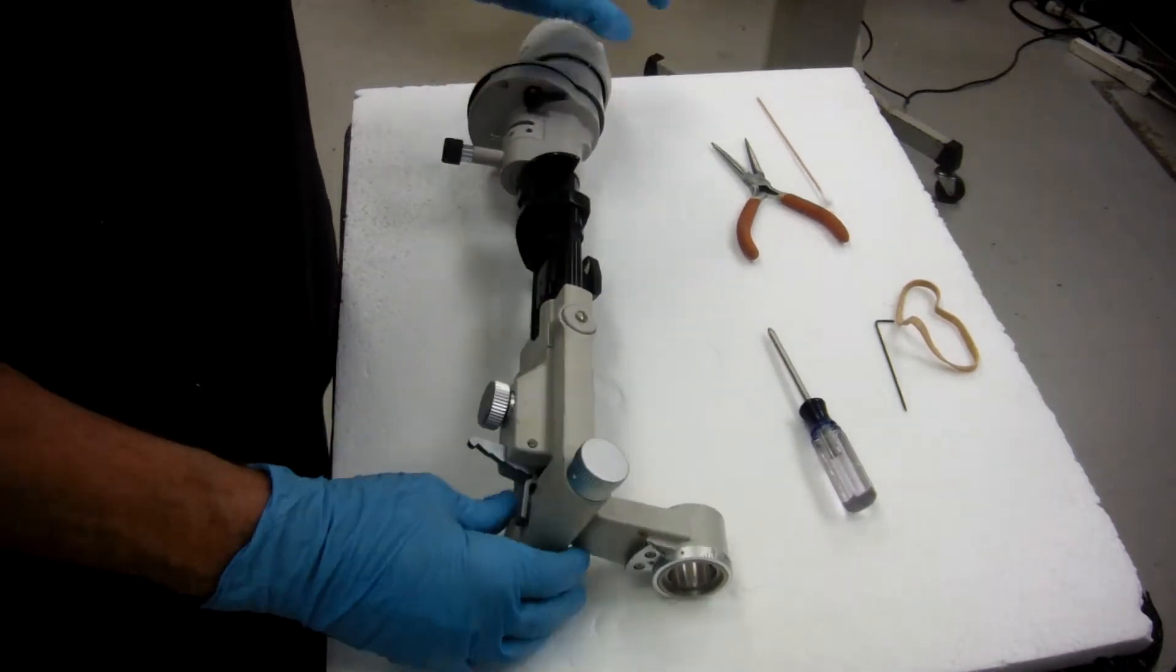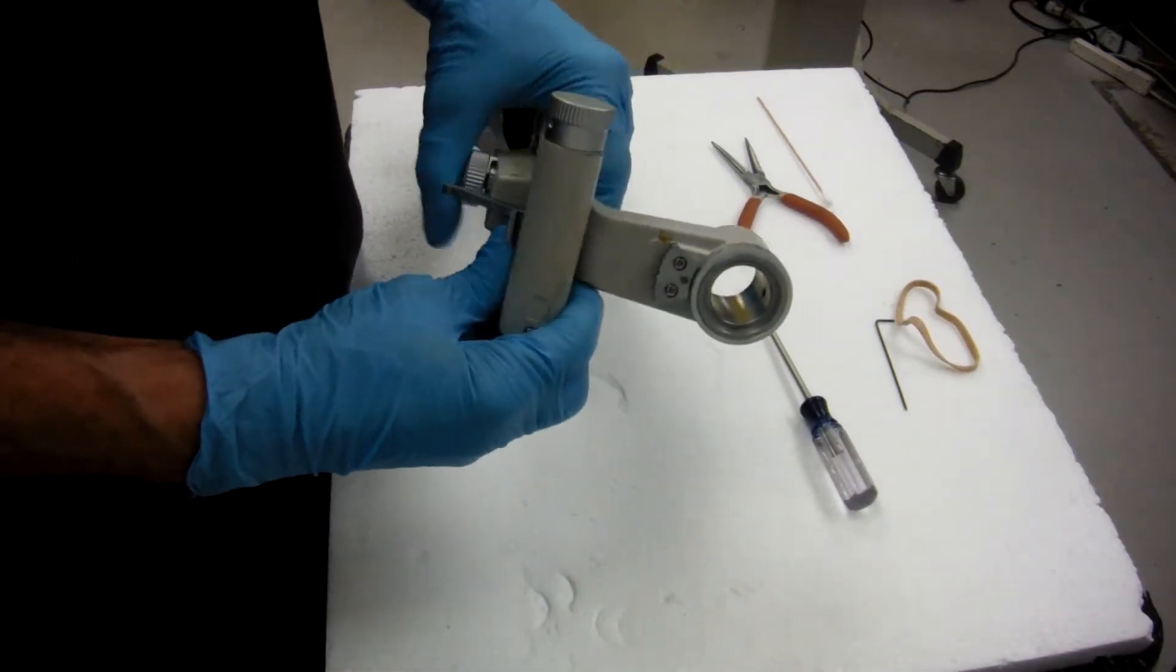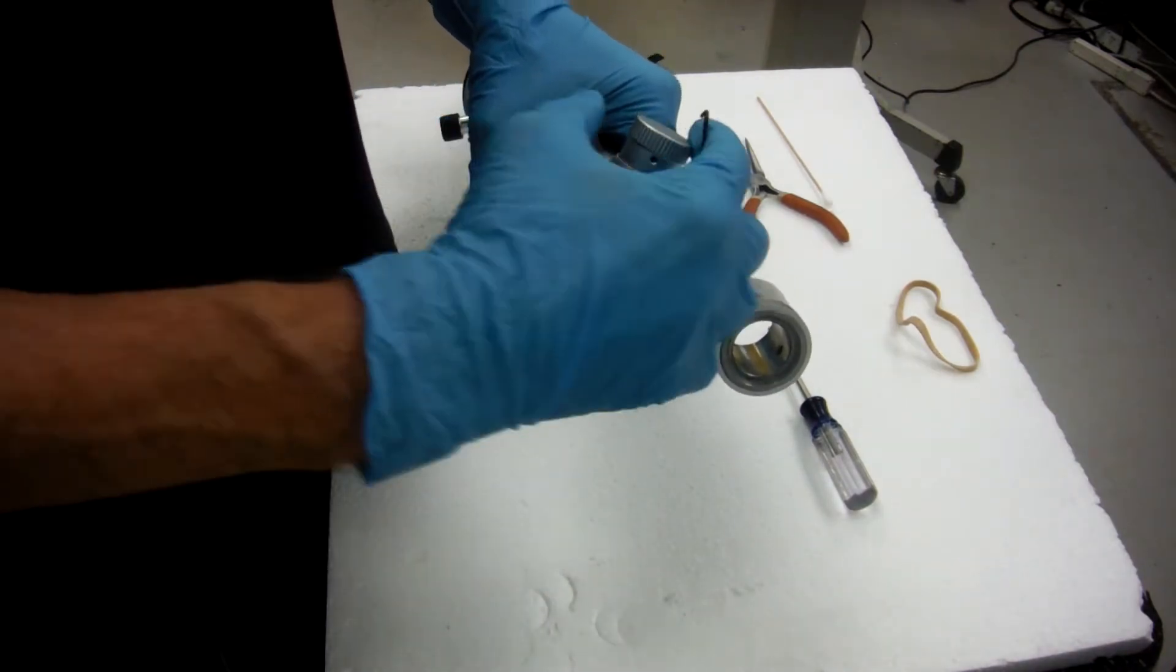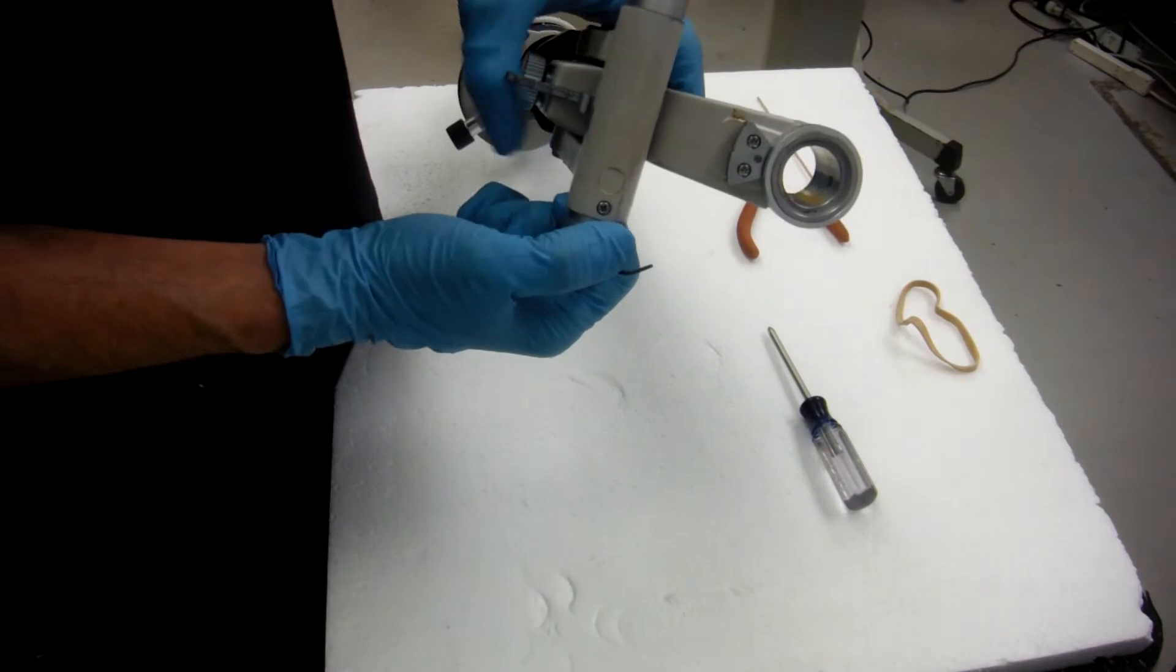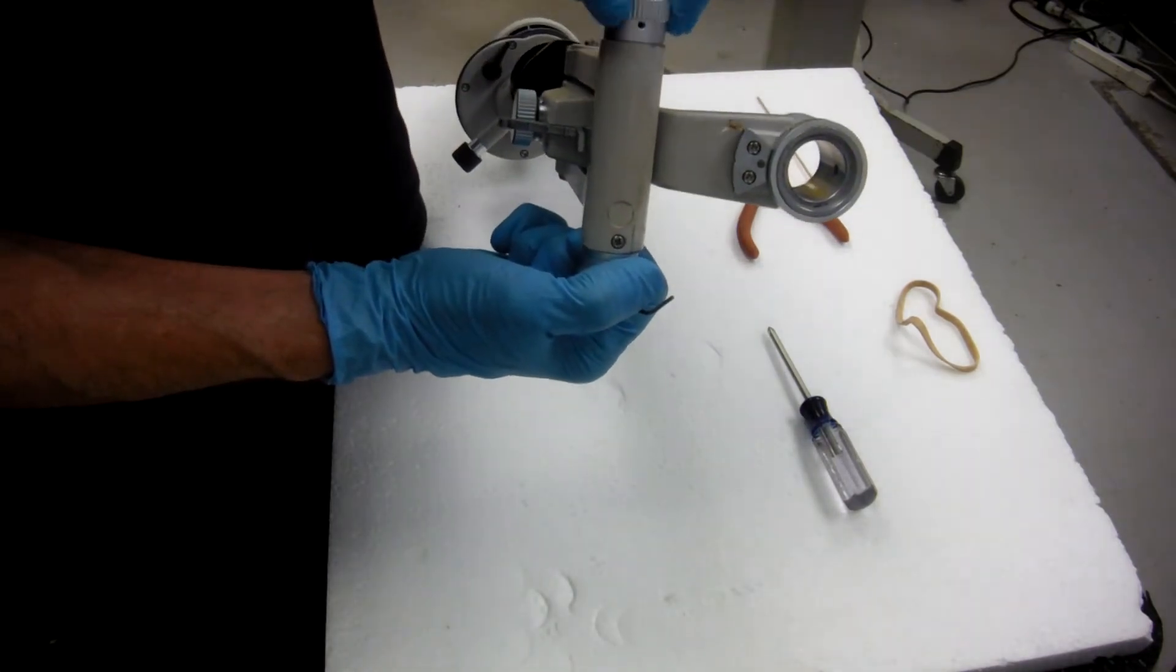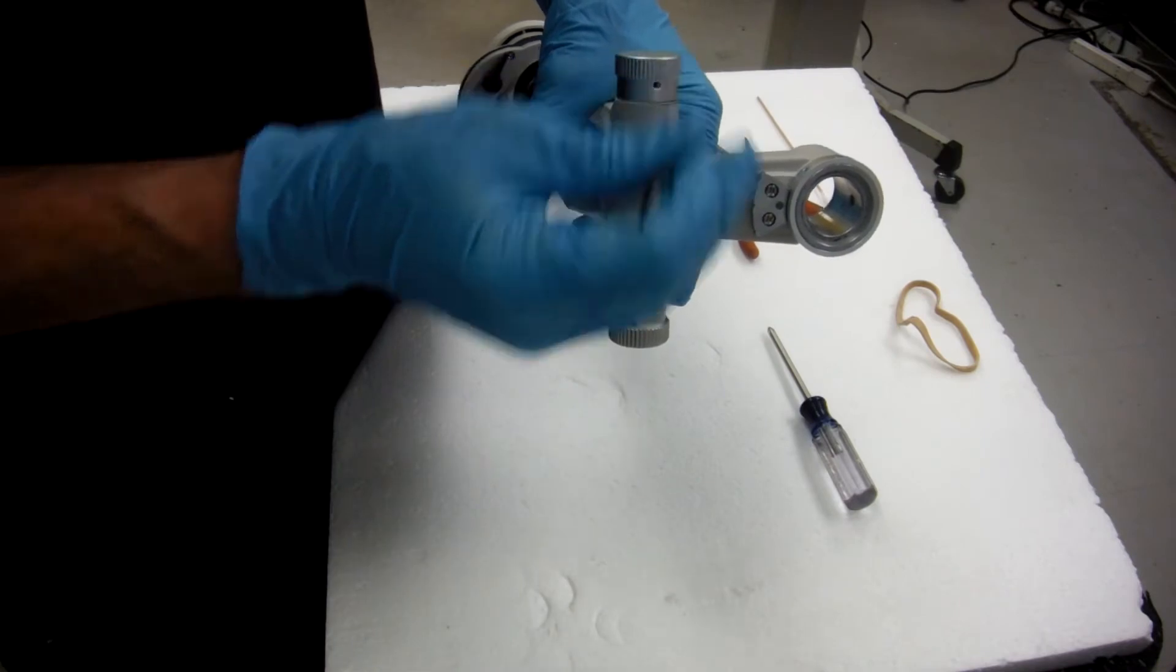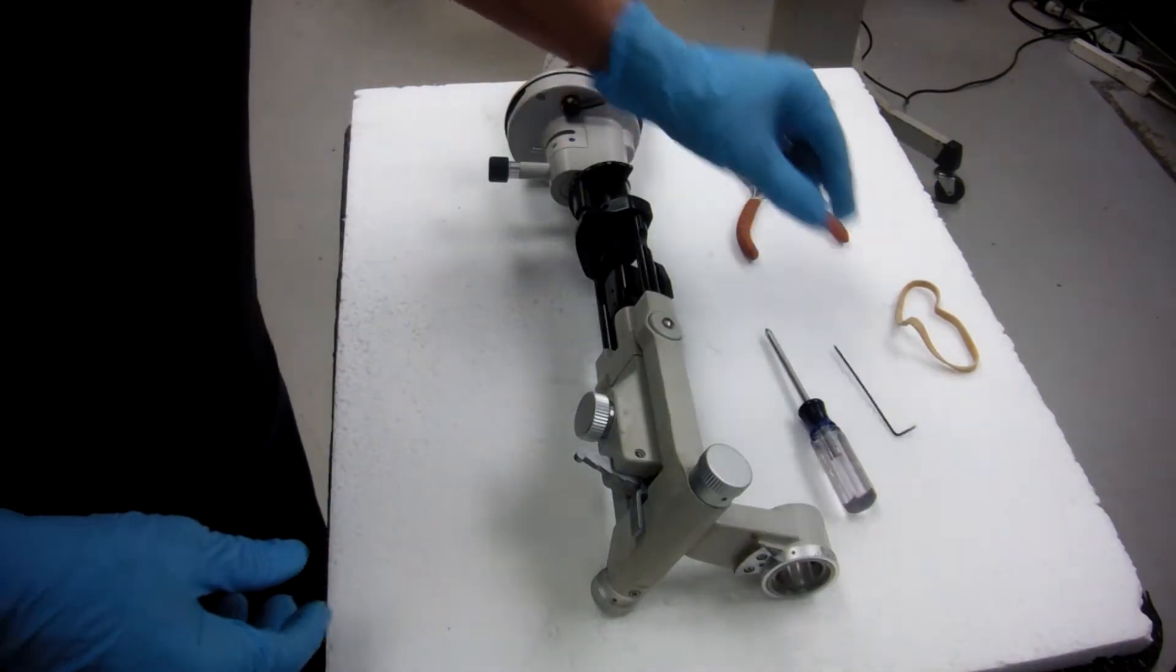You can adjust the tension by loosening this Allen, holding this in, and turning it, tightening it a little bit, and then lock it back in. That will increase your tension.